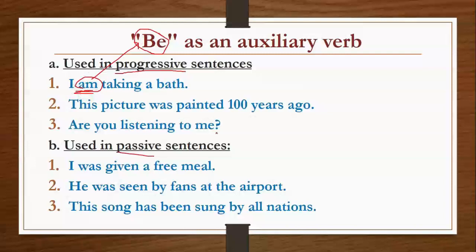'This picture was painted a hundred years ago.' Here you see 'was', which is another form of 'be'. So is, am, are, was, were — we use these in place of the word 'be'; we never write 'be' directly. Similarly, 'Are you listening to me?' — here 'be' is used in the form of 'are'.